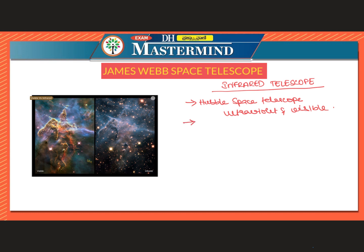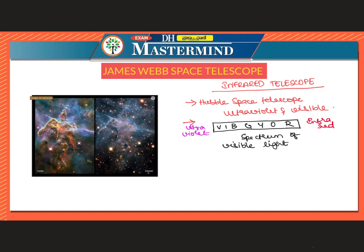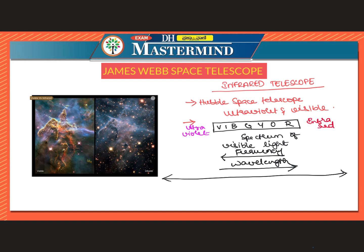We know that stars emit radiation across the spectrum — x-ray, ultraviolet, infrared, and visible light. In the visible light spectrum, frequency increases from red to violet while wavelength increases from violet to red. Hubble Space Telescope used to observe celestial bodies in the ultraviolet or visible light spectrum.